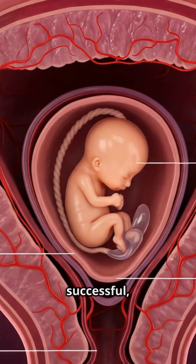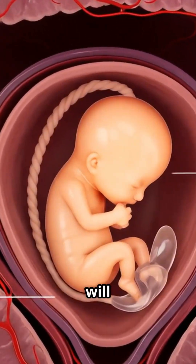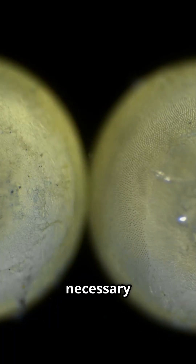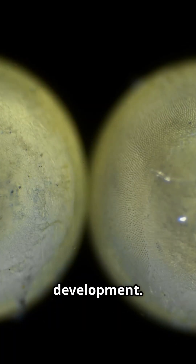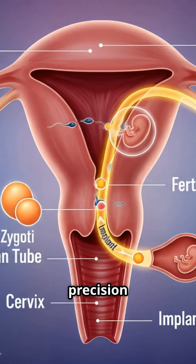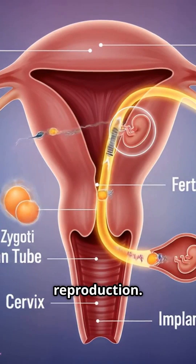If implantation is successful, the developing embryo will continue to grow supported by the maternal environment, eventually forming the placenta and the structures necessary for fetal development. From a single egg and a single sperm, the fertilization process thus sets in motion the remarkable chain of biological events that lead to the birth of one baby, highlighting the precision and wonder of human reproduction.